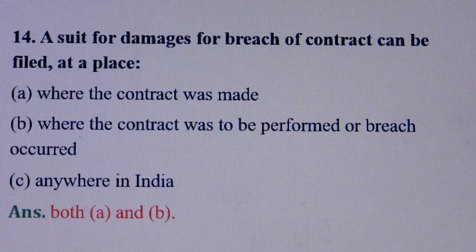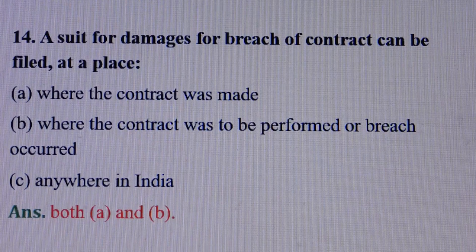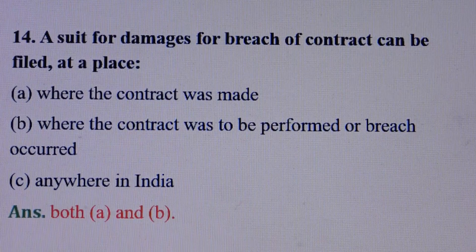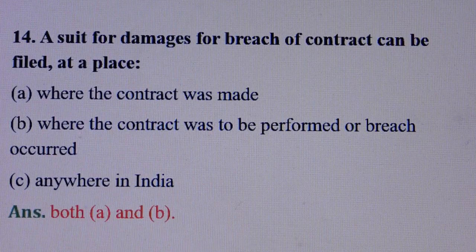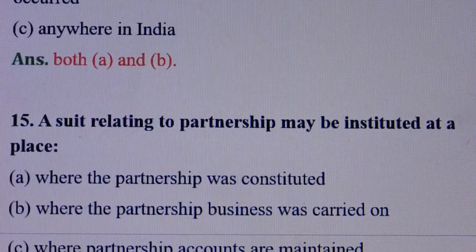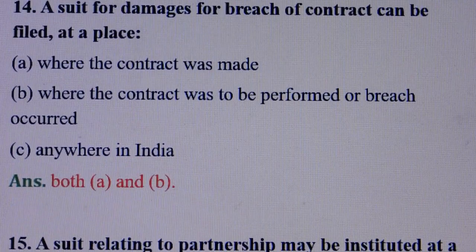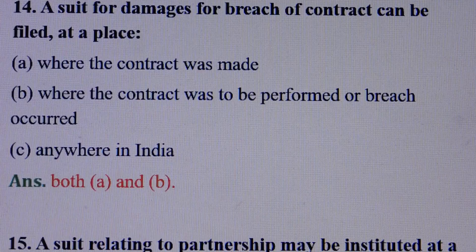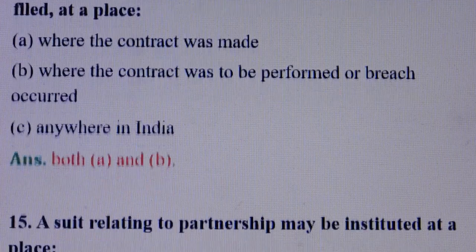Question number 14: A suit for damages for breach of contract can be filed at a place — answer is: both Option A and Option B. That means: Option A — where the contract was made; Option B — where the contract was to be performed or breach occurred.